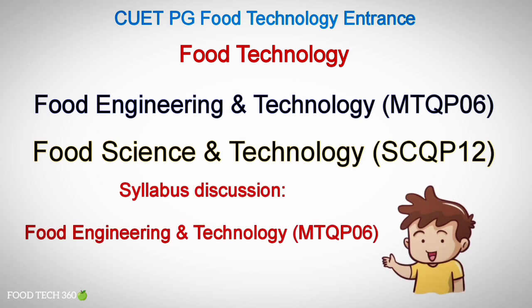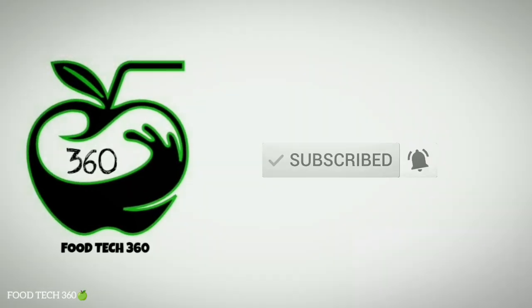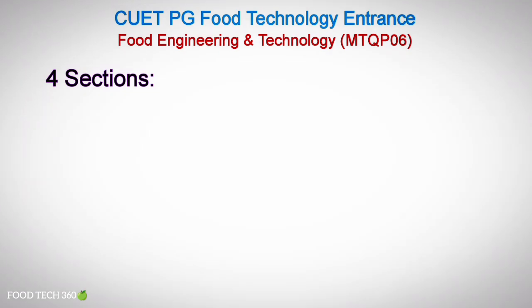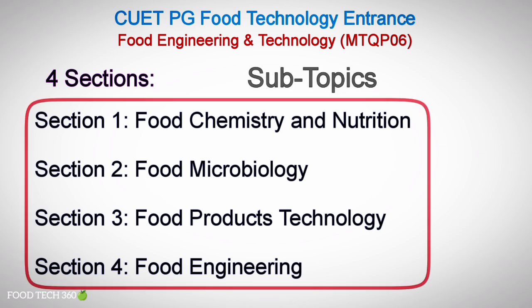In this video we are discussing the syllabus details for Food Engineering and Technology entrance exam as per the 2024 syllabus. So without any further delay, let's get started. The syllabus is divided into four sections: Section 1 is Food Chemistry and Nutrition, Section 2 is Food Microbiology, Section 3 is Food Products Technology, and Section 4 is Food Engineering.